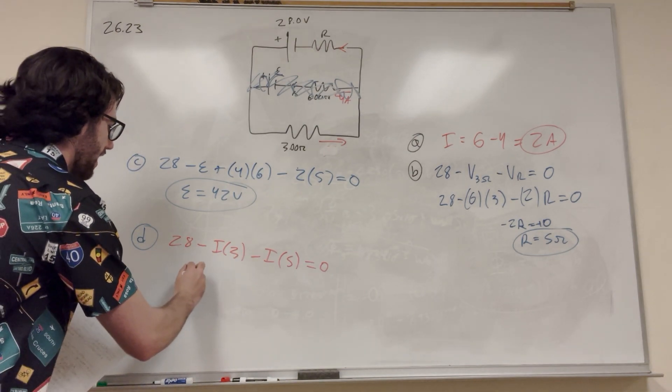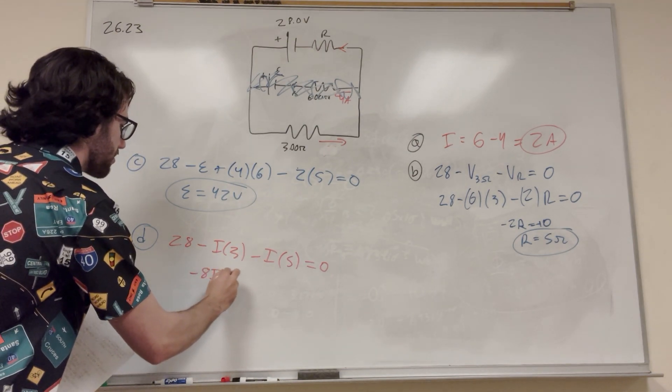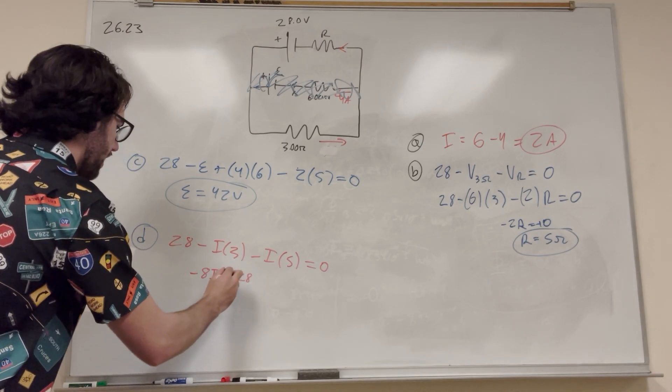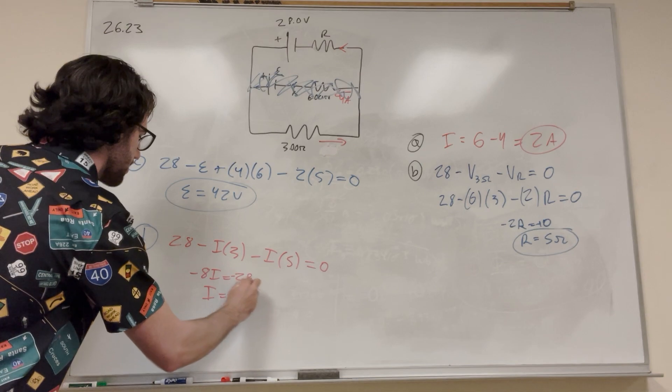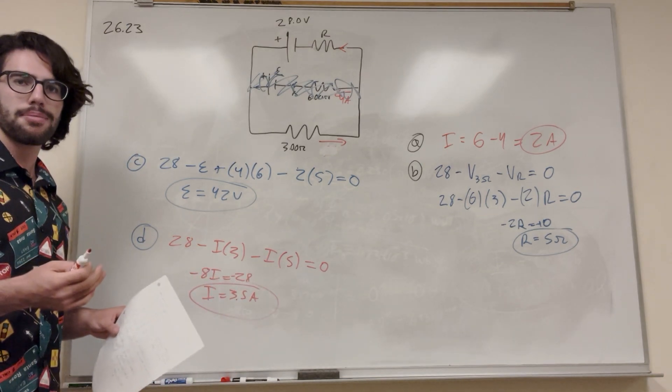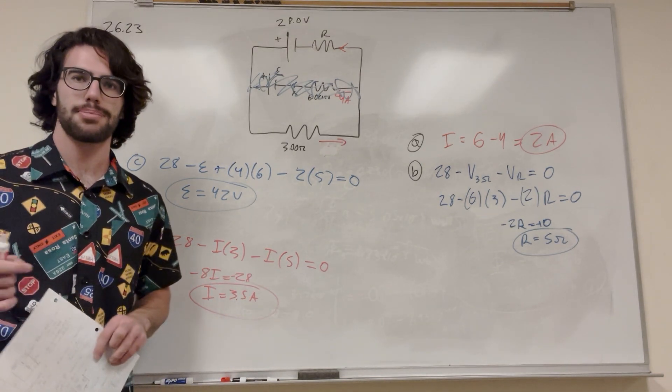So if you do this, it's going to be negative 8I is equal to negative 28, and you're just going to get that I is now equal to 3.5 amps. So there you go. That's how you solve this kind of problem. Thanks for watching. I'll see you in the next one, guys. Peace.